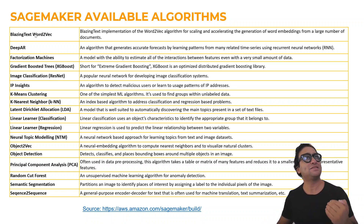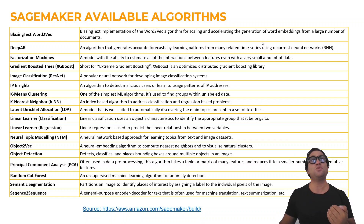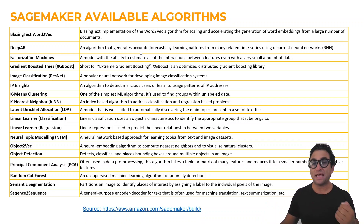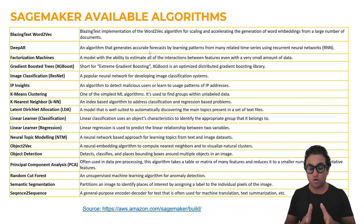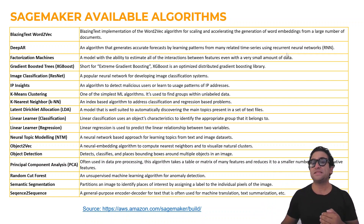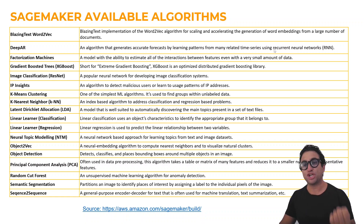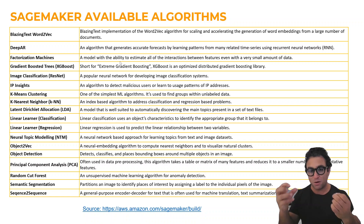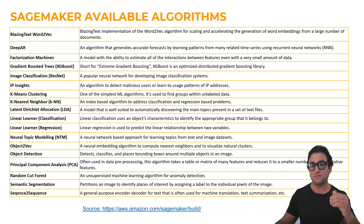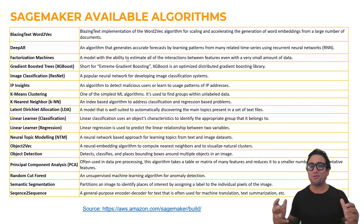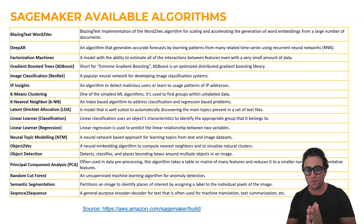For example, we have BlazingText and Word2Vec, which you can use to deal with word embedding and text data. We also have the DeepAR algorithm, which can be used to generate accurate forecasts, essentially performing time-series forecasting — predicting what's going to happen in the future. It uses a type of neural network known as Recurrent Neural Networks, or RNN. We also have factorization machines, which can model and estimate all the interactions between features, even with a very small amount of data. We can also use our gradient boosted algorithm of choice, which is XGBoost.